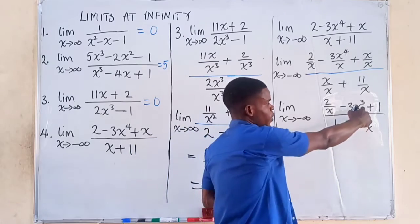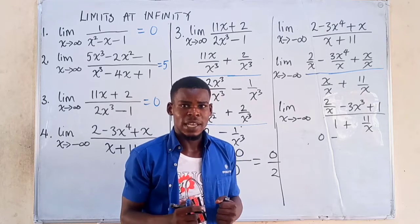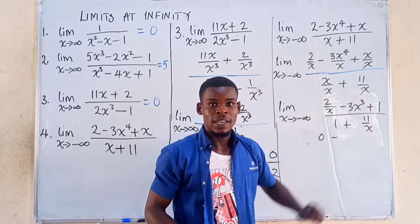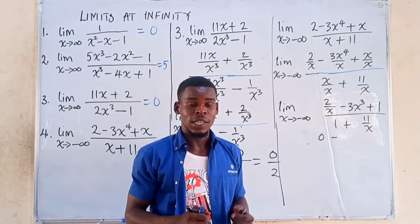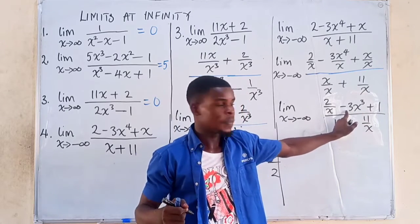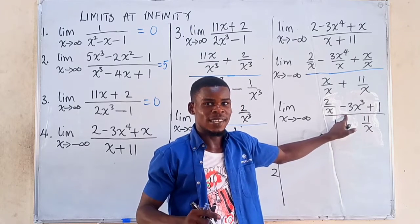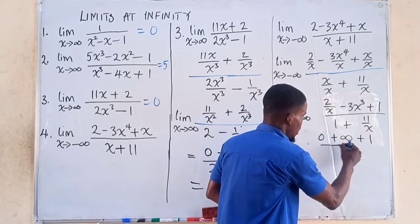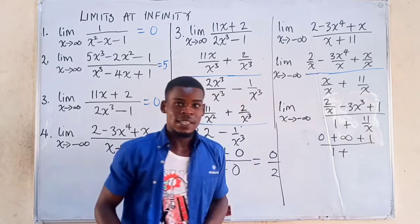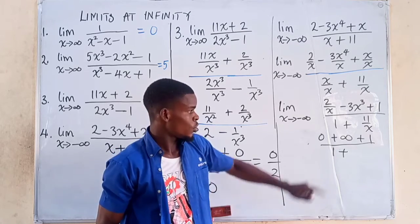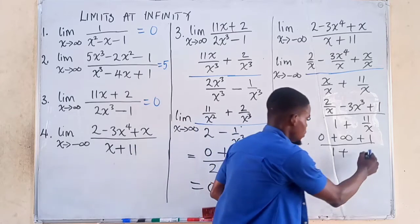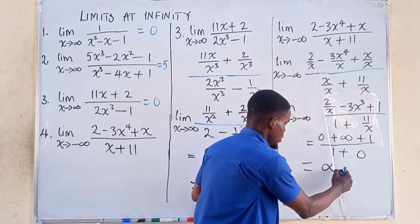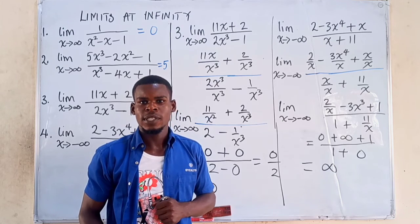Since x is raised to the power 3 and any negative number raised to the power 3 stays negative, as x approaches negative infinity, x cubed also approaches negative infinity. Multiplying by negative 3 gives positive infinity. Adding 1 keeps it positive infinity. The denominator becomes 1 plus 0, which is 1. So the limit is infinity divided by 1, and the result of this limit is infinity. Thanks for watching, please subscribe to my channel.